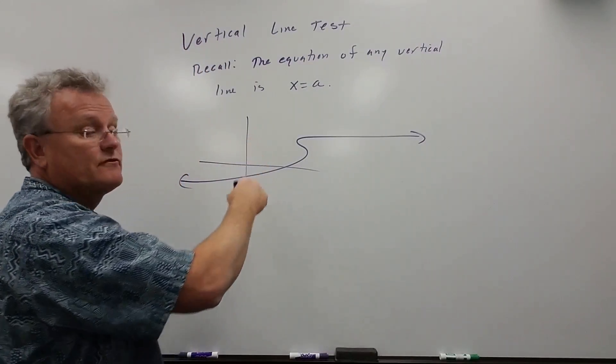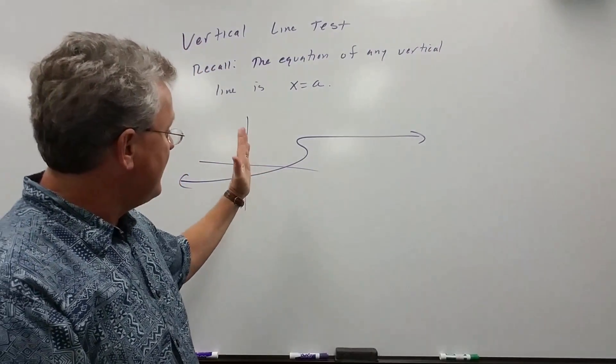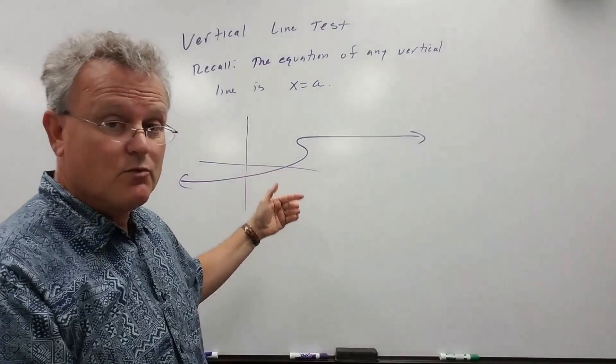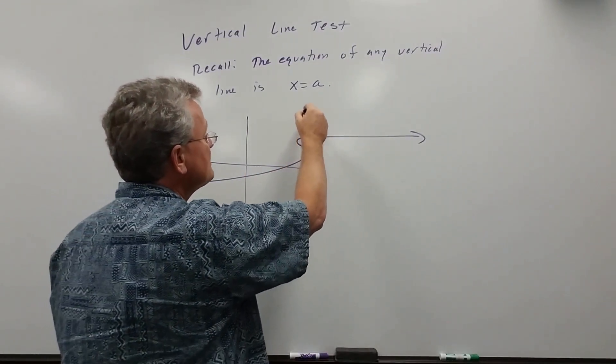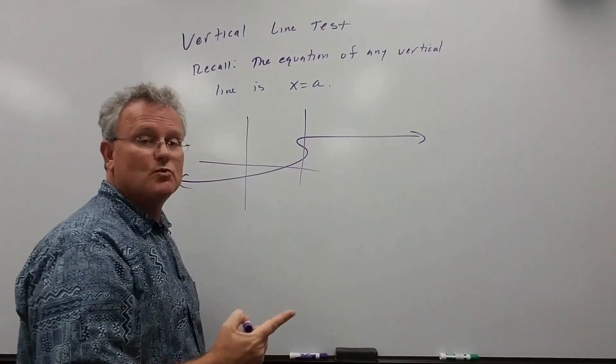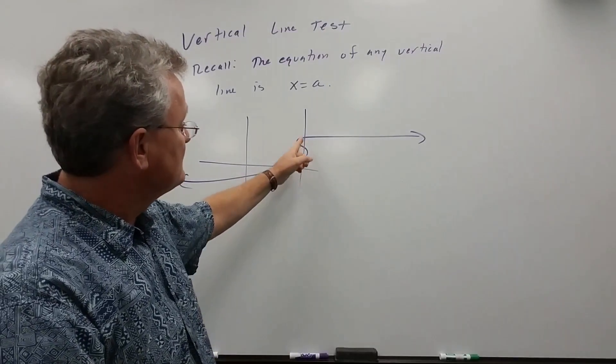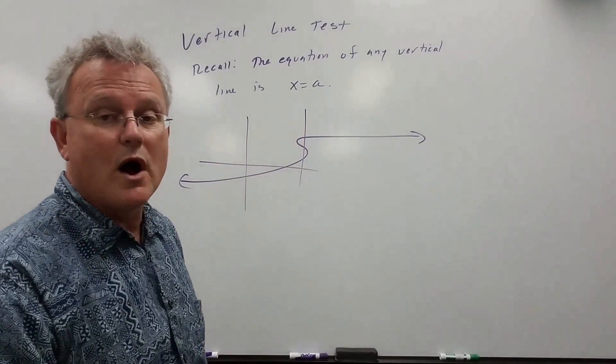We can draw several vertical lines where for each x there is only one y. But there are some x's, at least one, where given an x there is more than one y.